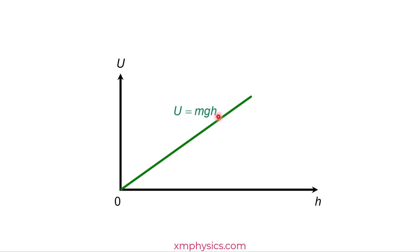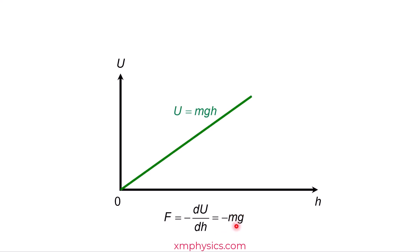Remember, mgh is for the GPE on the Earth's surface. You can literally do the differentiation, which gives you negative mg. So mg is the gravitational pull, and the negative sign is telling you the direction of the gravitational pull is towards H equals zero.